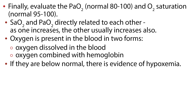Oxygen is also combined with hemoglobin. The SaO2, or the oxygen saturation of hemoglobin, is expressed as a percentage. At full saturation, the normal SaO2 is 95 to 100%. The SaO2 and PaO2 are directly related to each other — as one increases, the other usually increases also. So oxygen is present in the blood in two forms: oxygen dissolved in the blood, and oxygen combined with hemoglobin. If they are below normal, there is evidence of hypoxemia.